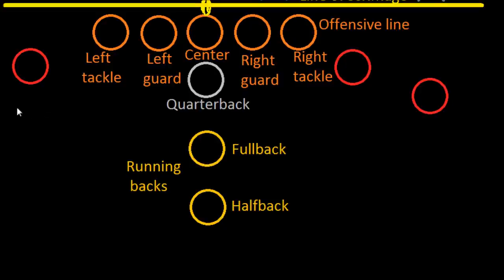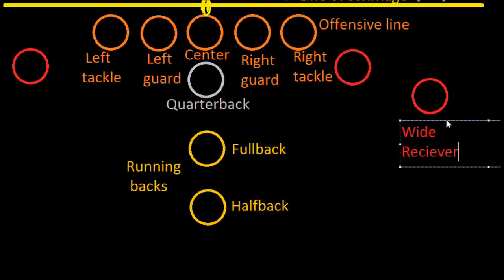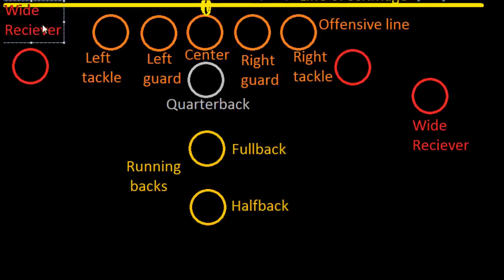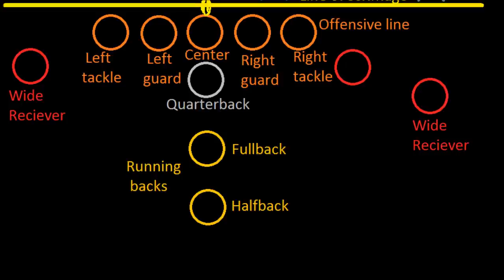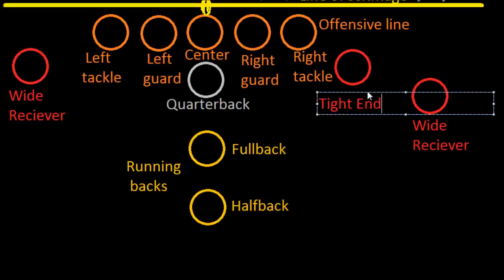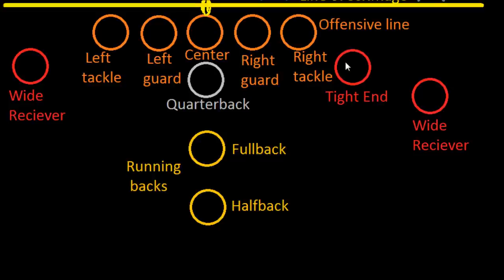If the quarterback decides to pass, he can throw to one of the wide receivers — the two guys way out on the ends, one on each side. There's also a final player called the tight end, who lines up closer to the offensive line. Sometimes the tight end will run a route and receive a pass; other times he acts as a sixth offensive lineman and blocks.